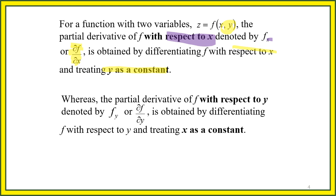The partial derivative of f with respect to y is denoted f_y, obtained by differentiating f with respect to y and treating x as a constant. So when differentiating with respect to x, y is constant; when differentiating with respect to y, x is constant.